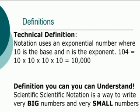Let's go over the definitions of scientific notation. The technical definition is that it uses an exponential number where 10 is the base and n is the exponent. The definition you can understand is that scientific notation is a way to write really big numbers and really small numbers. That's what scientific notation is used for.